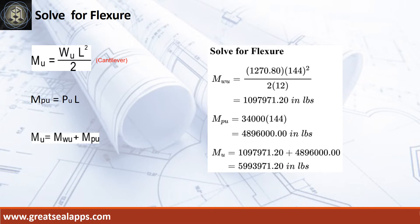Given factored uniform load equals 1,270.8 pounds per foot, factored concentrated load equals 34,000 pounds, and L equals 12 feet. The maximum moment from uniform load is 1,097,971.2 inch-pounds, the maximum moment from concentrated load is 4,896,000 inch-pounds, for a total maximum design moment of 5,993,971.2 inch-pounds.